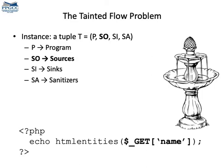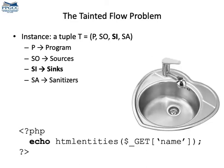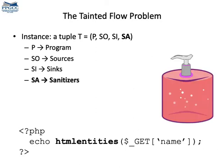The second component of a tainted flow exploit is a source of malicious information — that's some program input that an adversary can control. In our case it's the GET array used in PHP to read data from URLs. Then we have sinks, which are sensitive program sites that consume information. In the case of the first exploit that stole a cookie, the sink was the echo function. We might also have sanitizers, which are operations that clean information. In this domain we use the expressions clean and tainted. Clean data is data that's safe to use inside the program; tainted data is data that an adversary can control.